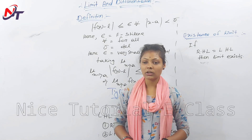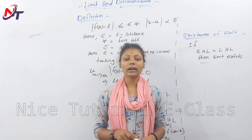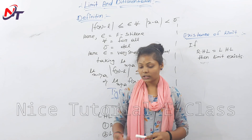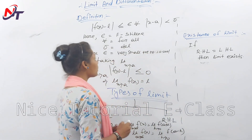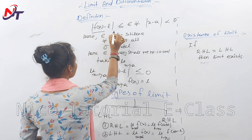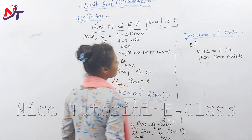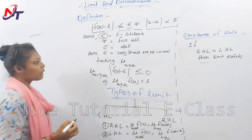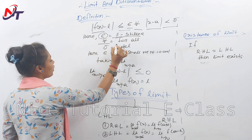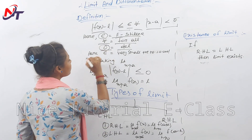Next is the definition of limit. We know the limit and its example. The definition is: f(x) is a function. The formal definition states: |f(x) − L| < epsilon for all |x − a| < delta. Epsilon is a very small positive number.